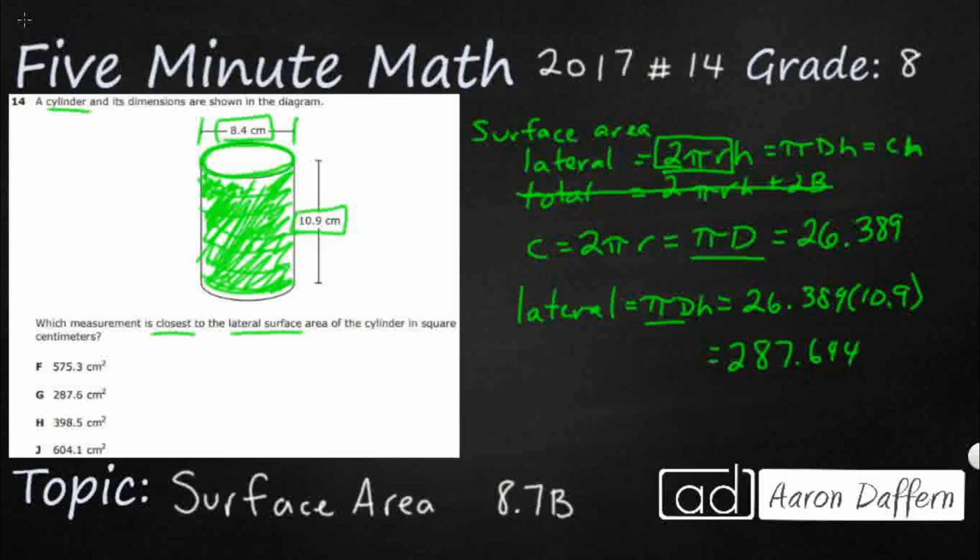And we are going to get 287.644, and there's more, but that's pretty good. And then we're going to get centimeters squared because we're looking for area. It's a two-dimensional. And so you see 287.6. We're just going to drop that 4 because it's not going to round that up to a 7. So our answer here is going to be G, 287.6 square centimeters.